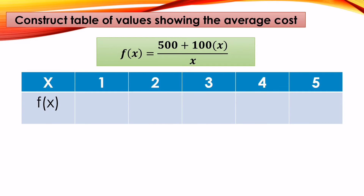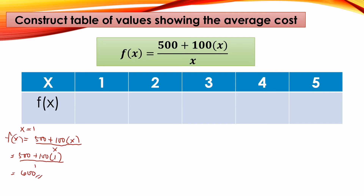We can choose any values of x. For example, the number of classes is 1, 2, 3, 4, 5. We need to substitute each value into our function. For x = 1: f(1) = (500 + 100×1) / 1 = 600. For x = 2: f(2) = (500 + 100×2) / 2 = (500 + 200) / 2 = 700 / 2 = 350.